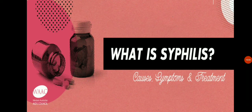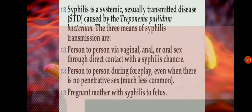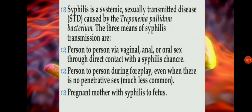Syphilis is caused by the Treponema pallidum bacterium and is one of the most dangerous sexually transmitted diseases. It enters the body through soft inner skin, usually in the vagina, anus, penis, or mouth. It is passed from person to person during sexual intercourse. Once in the body, the bacteria enter the bloodstream and infect the entire body. Syphilis can be life-threatening. If left untreated, it can cause heart disease, blindness, paralysis, or insanity.